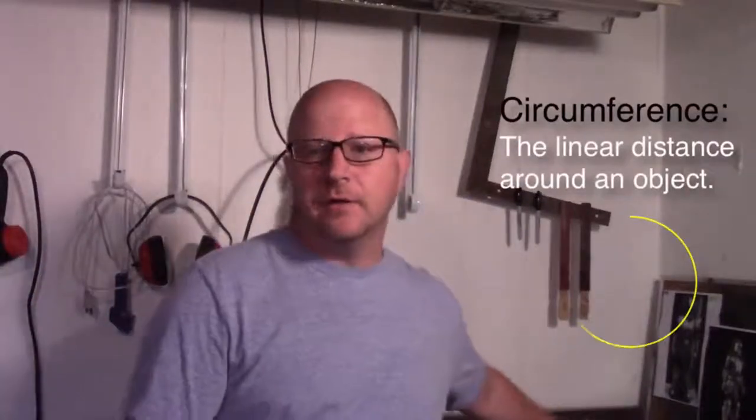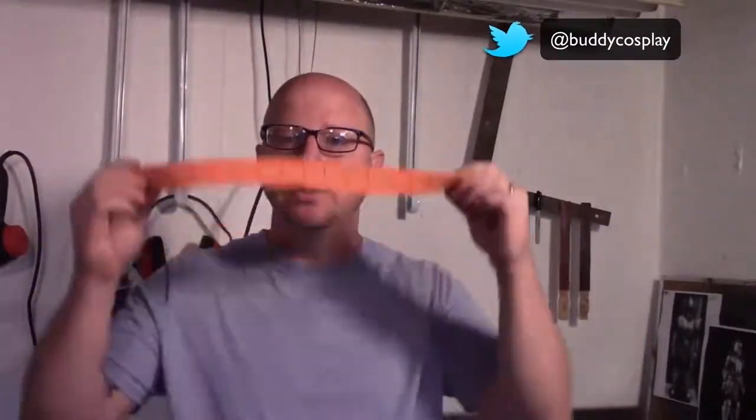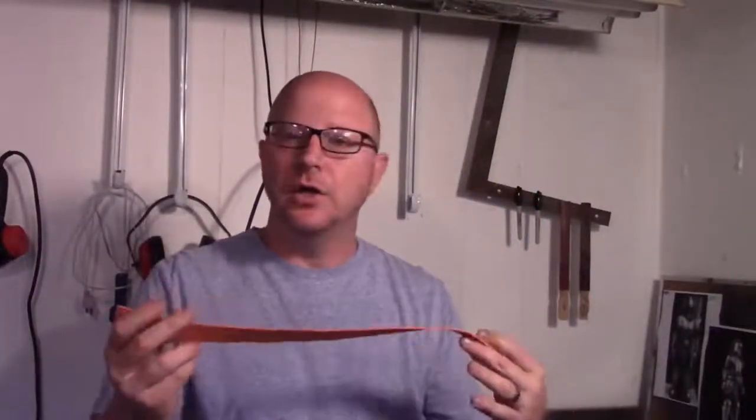So we're going to help solve that problem today by creating two different kinds of rulers. One is a simple, bendable, flexible foam ruler that you can use to take measurements around objects such as your wrists, your legs, things like that, so you can know the measurements.